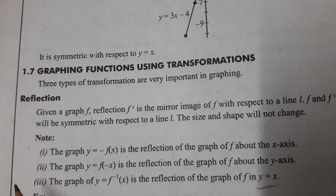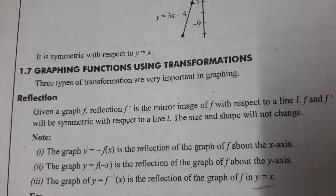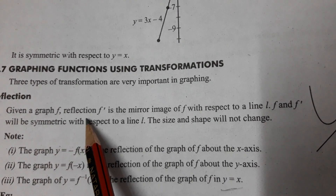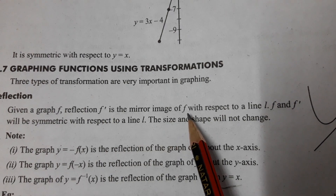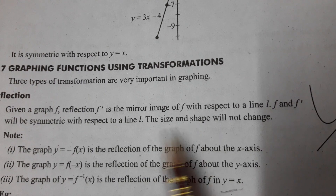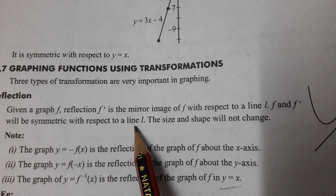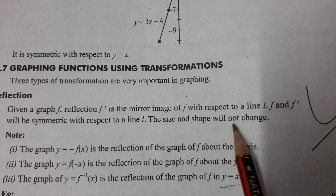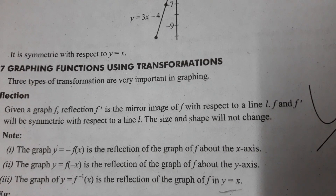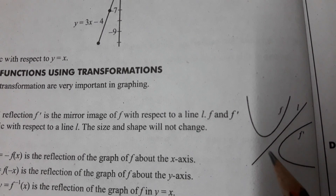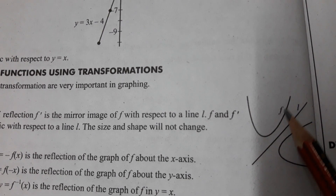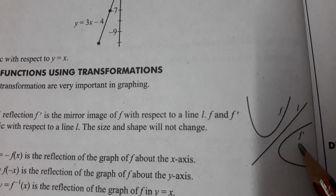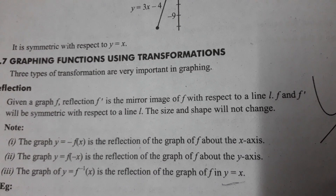First, reflection. Given a graph f, f-dash is the mirror image of f with respect to a line L. f and f-dash will be symmetric with respect to line L. The size and shape will not change — underline this: the size and shape will not change in reflection. See the diagram — this is line L, and the curve is called f, the reflection is the mirror image. The size and shape do not change.